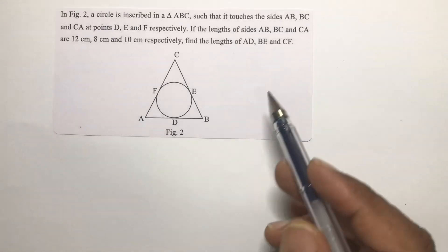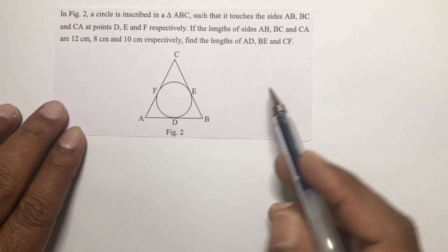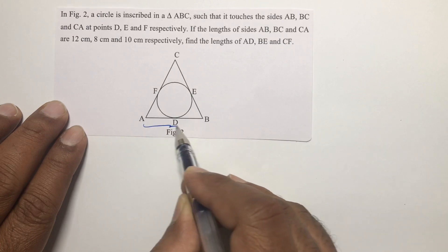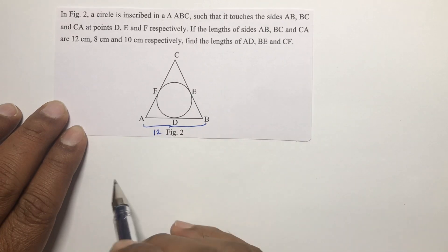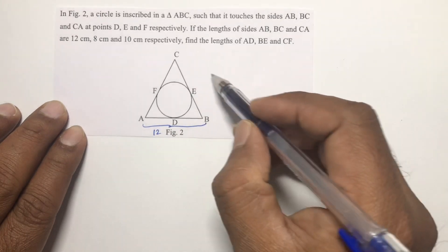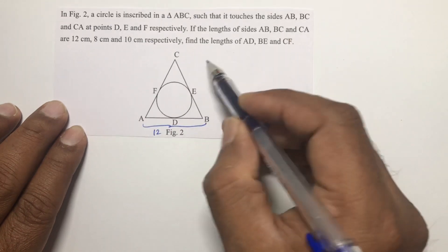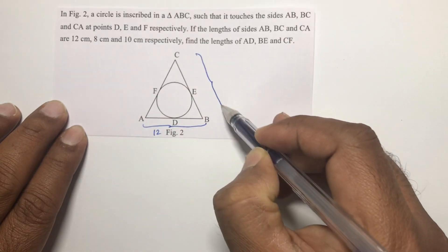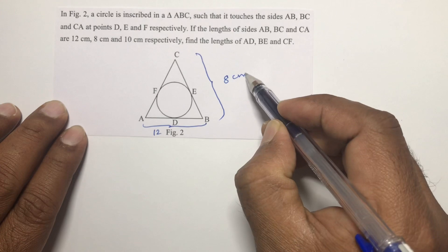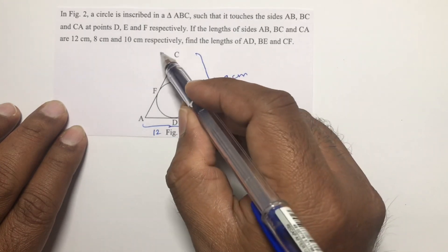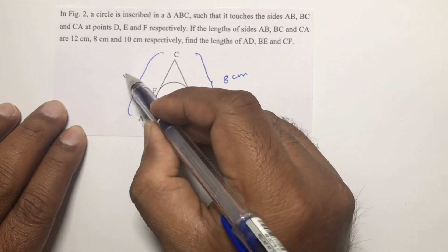If the length of the sides AB is 12 cm, BC is 8 cm, and CA is 10 cm.